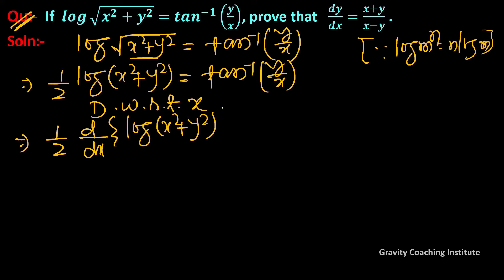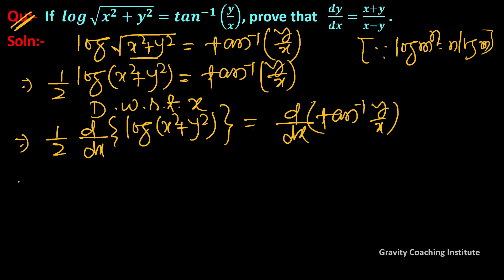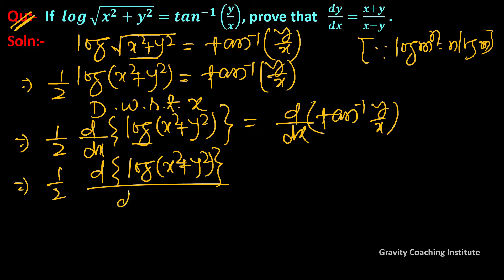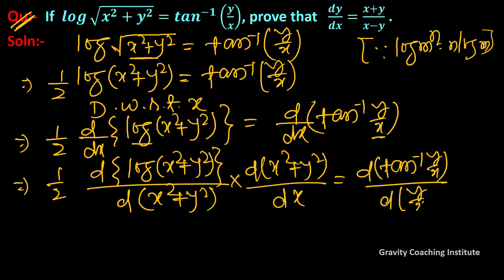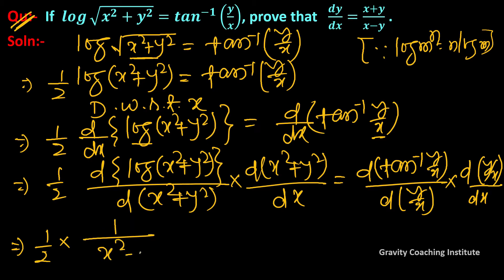Differentiation of x square plus y square, and for differentiating this log, we need to differentiate with respect to x square plus y square. So it will be d(x square plus y square) upon dx. And for differentiating tan inverse, we do it with respect to y upon x: d(tan inverse y upon x) upon d(y upon x), multiply d(y upon x) upon dx. So this implies that 1 upon 2 into 1 upon x square plus y square.